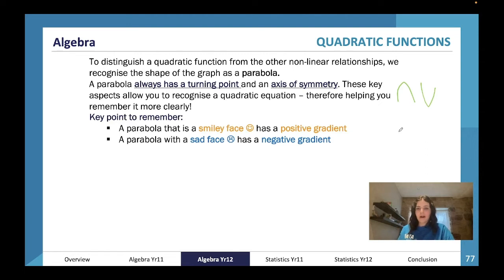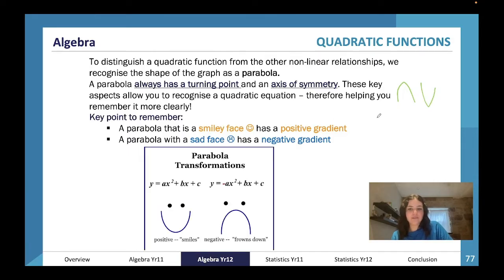Very important: a parabola that has a smiley face is a positive gradient, so smiley, good, positive, yay, everything's going right in the world. A parabola with a sad face has a negative gradient, so boo, sad, not good, it's got a sad face. You can see ax² + bx + c is a positive; see how it's a positive? This one's negative. Important tip to remember: put that on a summary sheet.